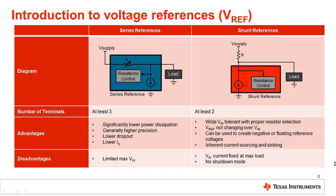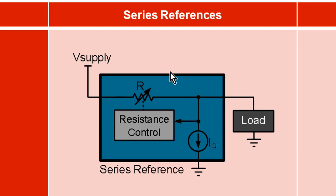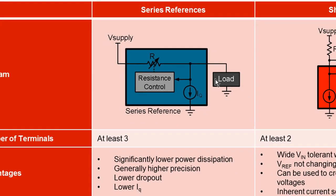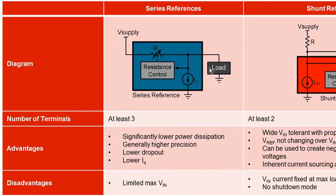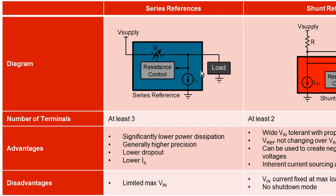Let's see how the series and shunt VRF topologies compare with respect to advantages and limitations. Here on the left, series voltage references have at least three terminals: supply voltage, output voltage, and ground. Since this topology of voltage reference only consumes the amount of current needed by the load, along with the small quiescent current, one of the main advantages of the series device is that it can be designed to achieve very low power consumption. One of the restrictions of the series topology is the limit on the maximum input voltage, which limits possible configurations of the device.